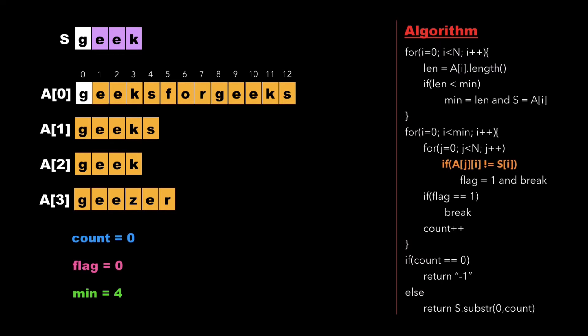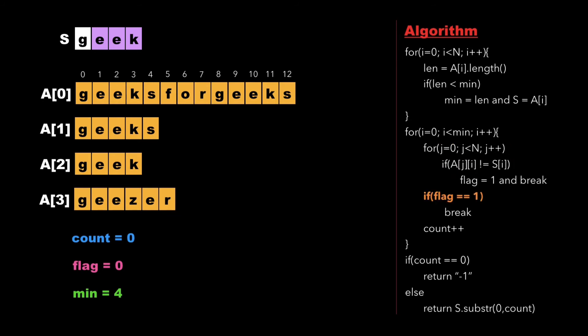We check whether the first character of s is not equal to the first character of a[0]. Both characters are equal, so we increment j. We continue comparing the first character of s against a[1], a[2], and so on. Both characters are equal each time, so we continue until we reach a[3]. Since the value of flag is zero, we move further and update count to one, then increment i.